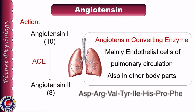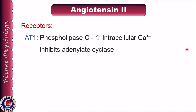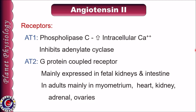Angiotensin 2 is the biologically active form and acts through AT1 and AT2 receptors. AT1 receptors mediate major cardiovascular effects of angiotensin 2, which include vasoconstriction, aldosterone and vasopressin release, cardiac hypertrophy, augmentation of noradrenergic activity, and vascular smooth muscle proliferation. These effects are mediated via the phospholipase C second messenger system, which increases intracellular calcium concentration. It also inhibits adenylate cyclase. AT2 receptors are highly expressed in fetal kidneys and intestine; in adults they are mainly found in myometrium and are also present in smaller quantities in the adrenal gland and fallopian tube.